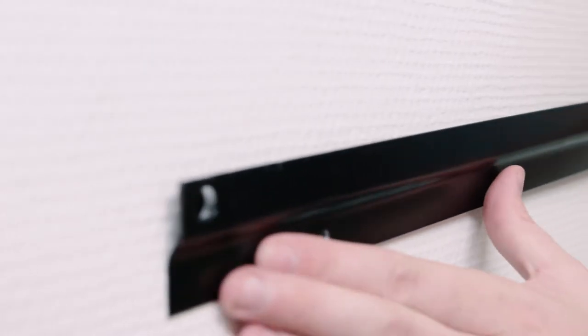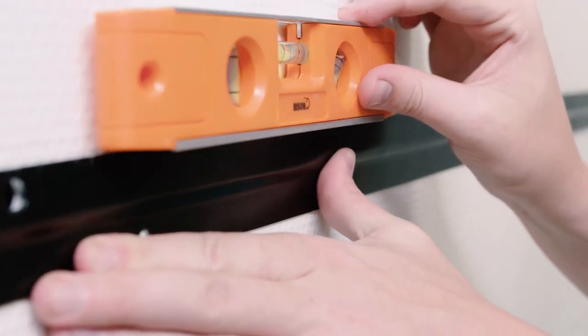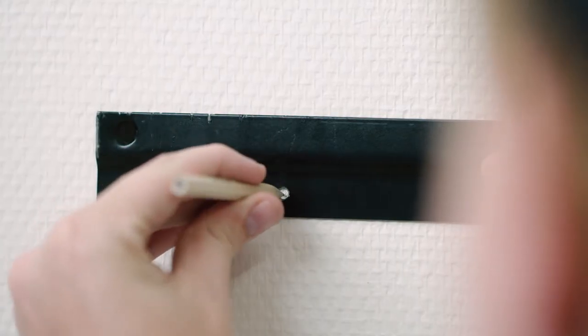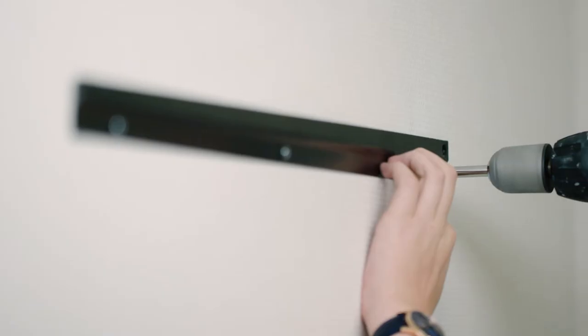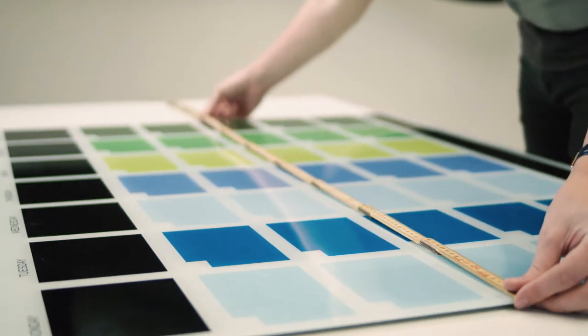First, you mount the upper rail. Measure the location from the top of the board. Make sure that the rail is placed completely horizontally. Make sure that the rail is in the correct position relative to the width of the board.